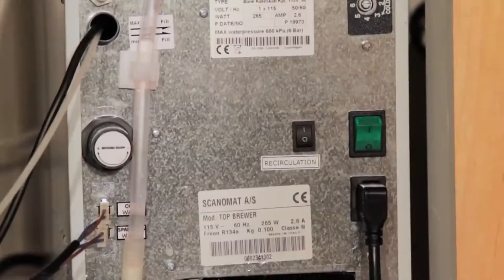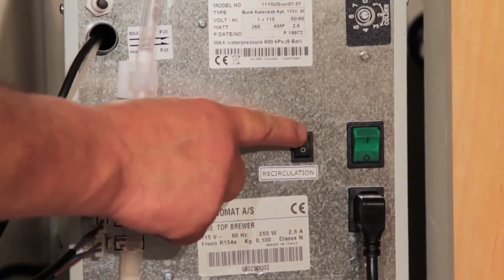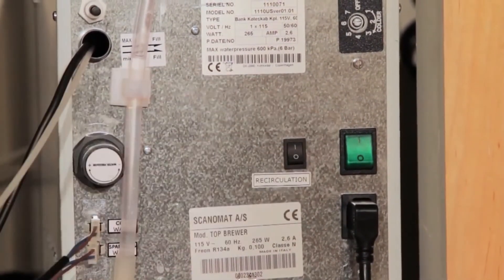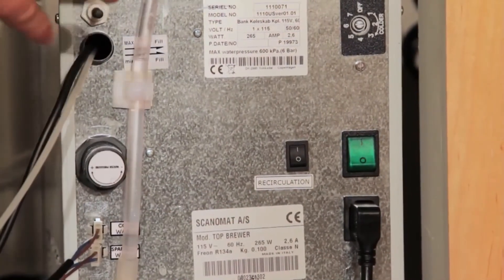One last step before turning the machine around is make sure that your circulation motor is in the on position. You can also turn the ice bank on as well, because once we plug it in then power is on and you're not reaching behind the unit.